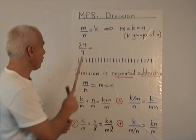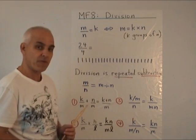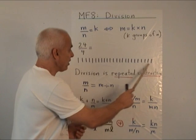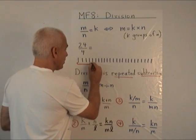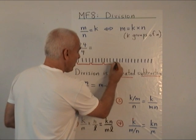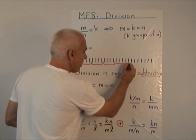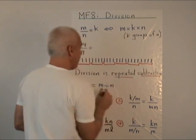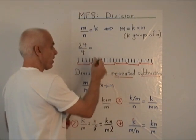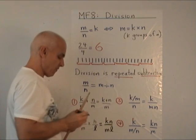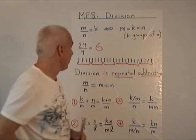So for example, if we want to know what 24 divided by 4 is, we need to know how many groups of 4 there are in 24. We can peel off groups of 4 one at a time. And now we see that there are 1, 2, 3, 4, 5, 6 groups of 4 within 24. So 24 divided by 4 is 6.